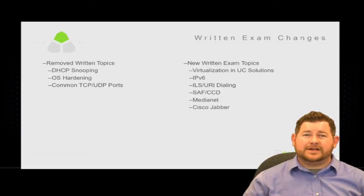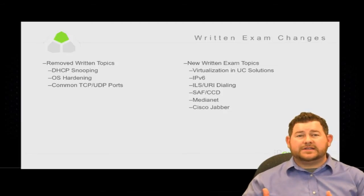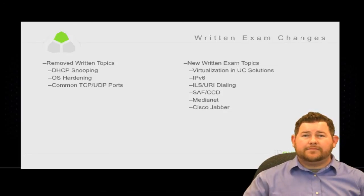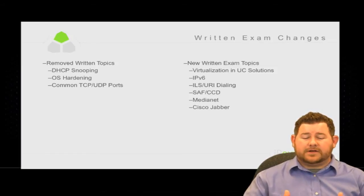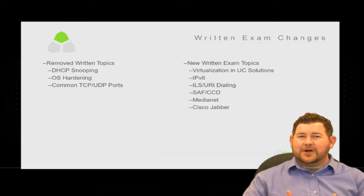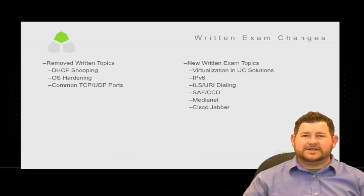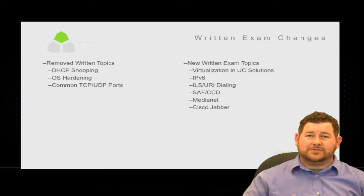They've added quite a few topics and will be testing on those quite a bit. First, virtualization in UC solutions — that's everywhere at this point. We're talking about VMware on top of UCS or some type of third-party system, so you need to understand what virtualization does. IPv6 is also being introduced now, which is a good thing. We keep saying year after year it's coming, and it's still coming — IPv6 is going to be huge, as we're running out of address space.